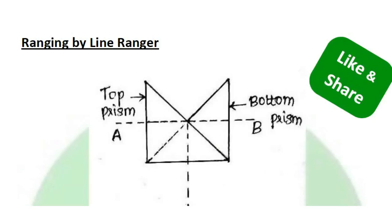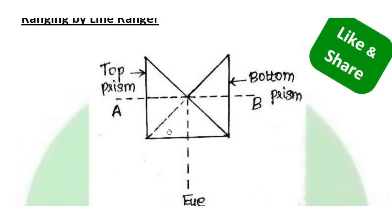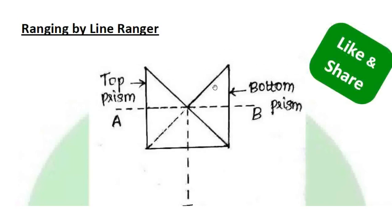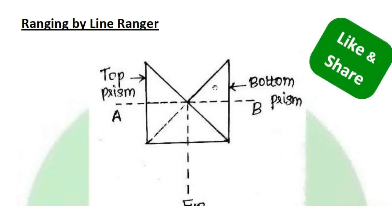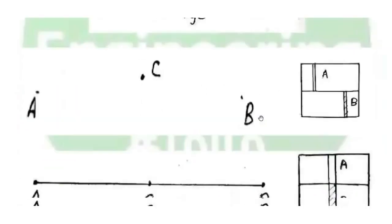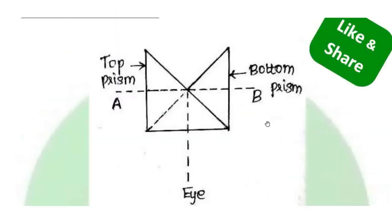A Line Ranger is an optical instrument with two right-angled triangular prisms placed one above the other — a bottom prism and a top prism. A and B are the end points, and the intermediate point C is fixed using the Line Ranger. The handle is held at the center.